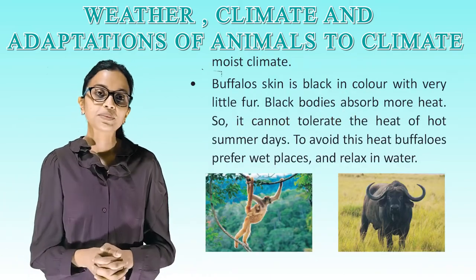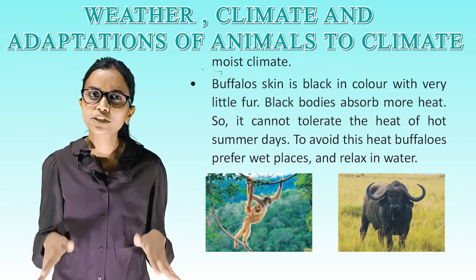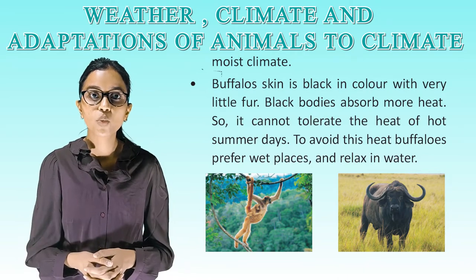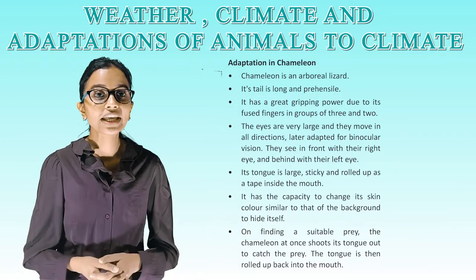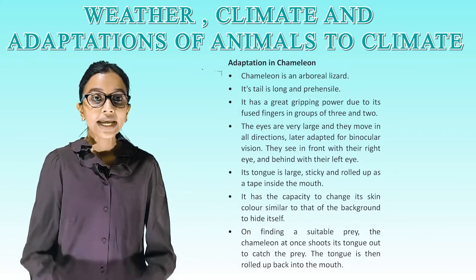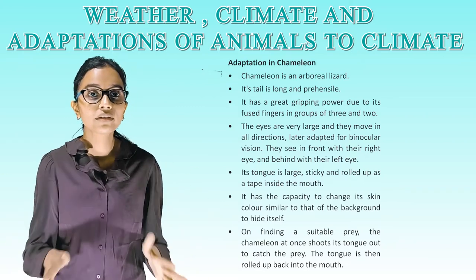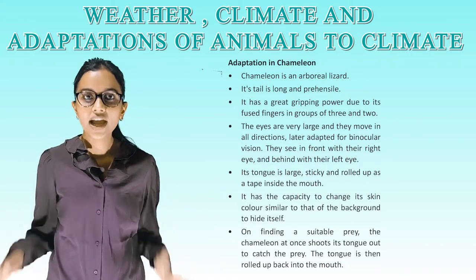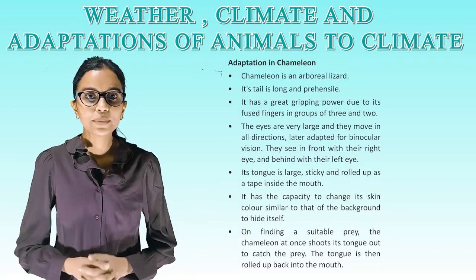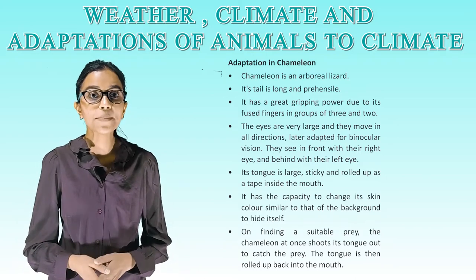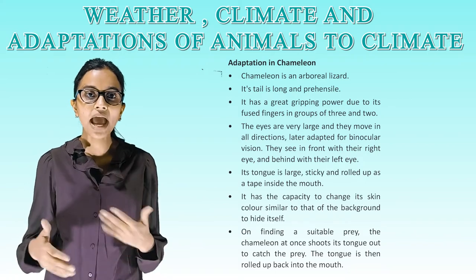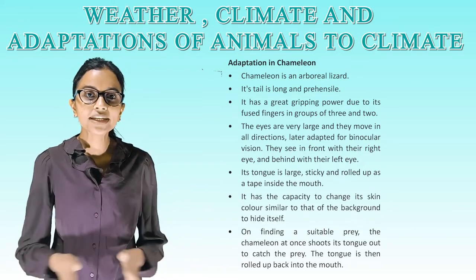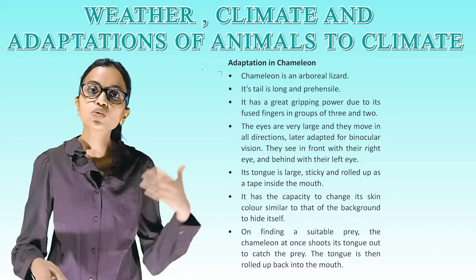Adaptation in buffalo: the buffalo is well adapted to wet or moist climate. Buffalo skin is black in color with very little fur. Black bodies absorb more heat, so it cannot tolerate the heat of hot summer days. To avoid this, buffaloes prefer wet places and relax in water. Adaptation in chameleon: the chameleon is an arboreal lizard. Its tail is long and prehensile with great gripping power due to fused fingers in groups of three and two. Its eyes are very large and move in all directions, adapted for binocular vision — it sees in front with its right eye and behind with its left. Its tongue is large, sticky and rolled up inside the mouth. It has the capacity to change its skin color to match the background to hide itself. On finding suitable prey, the chameleon shoots its tongue out to catch it, then rolls the tongue back into the mouth.